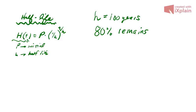The initial amount we'll just say is 100%. So we want to know when 80% remains of an initial amount of 100, of one-half to the t, and then over 100 years.